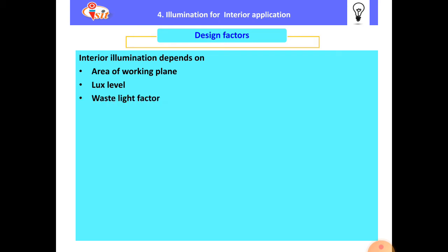After that, the waste light factor — what the allowable waste light factor is for that particular portion in a residential installation. Interior illumination also depends on the waste light factor. After that, the utilization factor: in the interior, there are various areas and various working planes, and according to the working plane and application, utilization factors are decided. This factor is also considered for interior illumination.